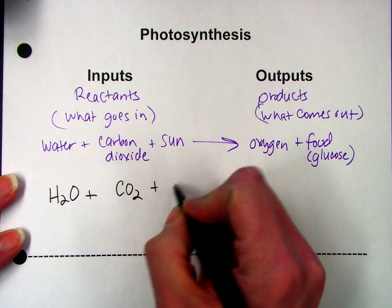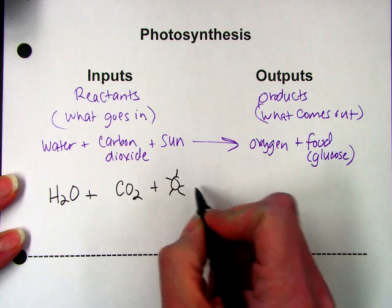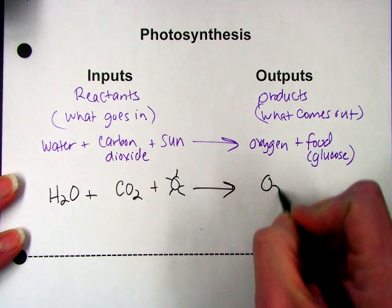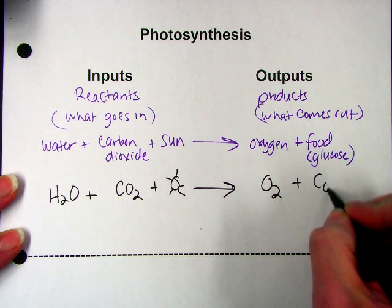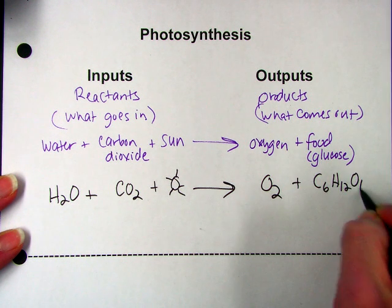I'm just going to use the picture of the sun. Oxygen is O2, and the symbol for glucose is C6H12O6.